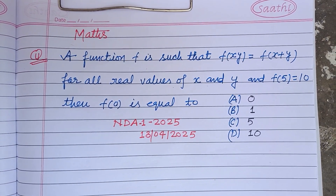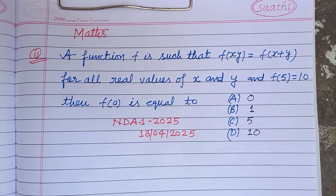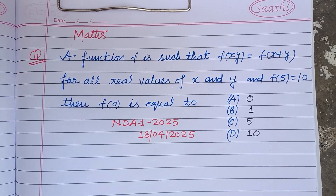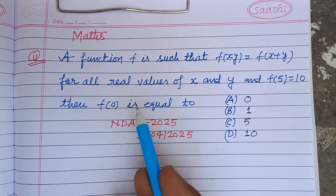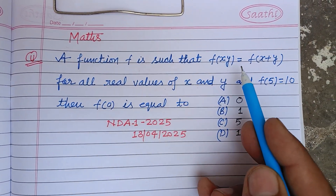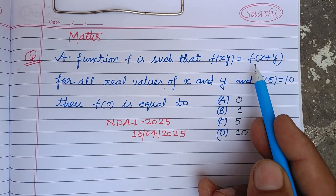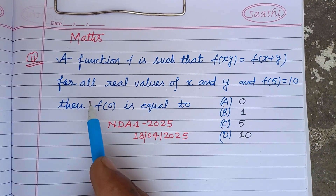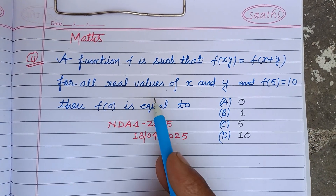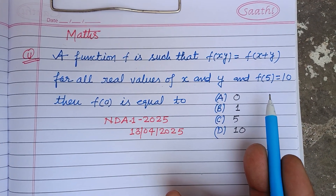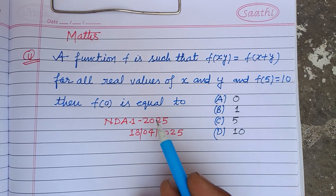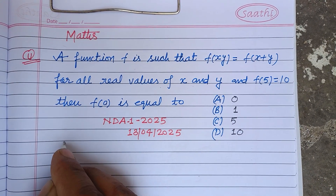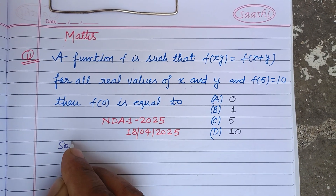Welcome to this YouTube channel. This is a question from NDF 1st 2025. A function f is such that f(xy) equals f(x) plus f(y) for all real values of x and y. f(5) is 10 and f(0) is equal to what?